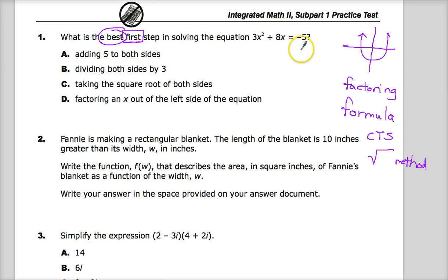Why would we do that? Because we'd end up with plus 5 here, plus 5 here. This would be 0, because negative 5 and 5 would cancel each other out. End up with 3x squared plus 8x plus 5.